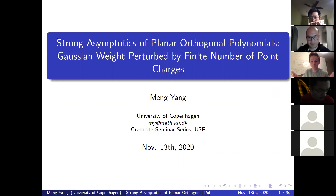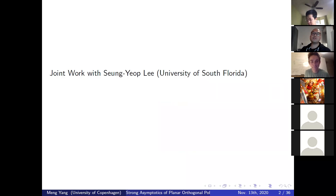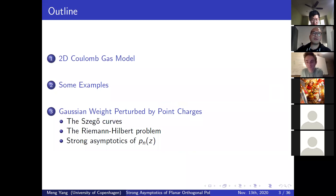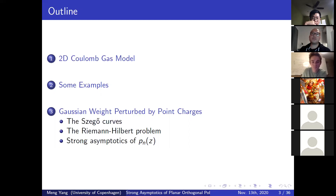I would like to thank Nansen and Fudong for inviting me to present our work. This talk is based on joint work with my PhD advisor, Sun Yip Li. Today I will start with a two-dimensional Coulomb gas model, then list some examples. The third part is the main part, where I will talk about two cases: the first for Gaussian weight perturbed by one point charge, and the second generalizing to Gaussian weight perturbed by multiple point charges. In the main part, I will also talk about the Zagel curves and how to construct the Riemann-Hilbert problem, and lastly the final result of strong asymptotics of orthogonal polynomials.